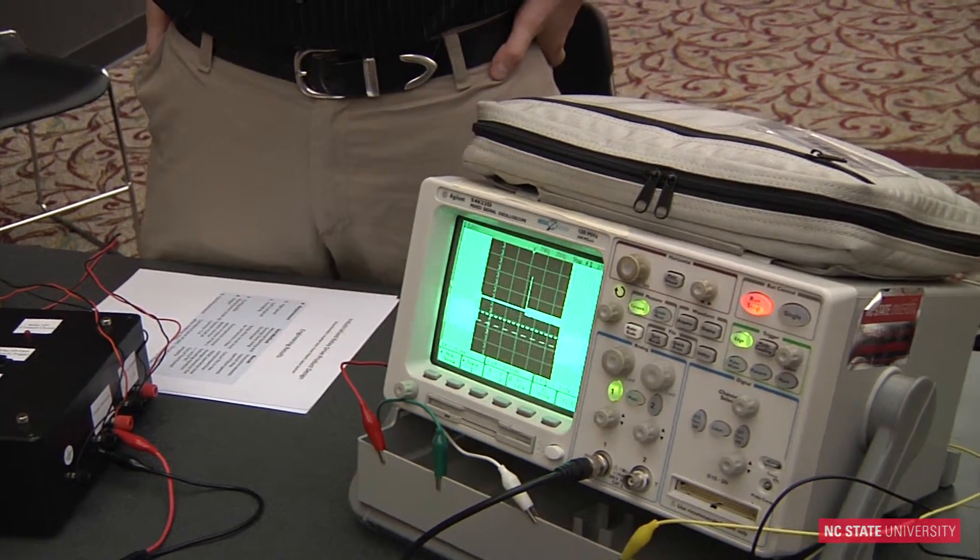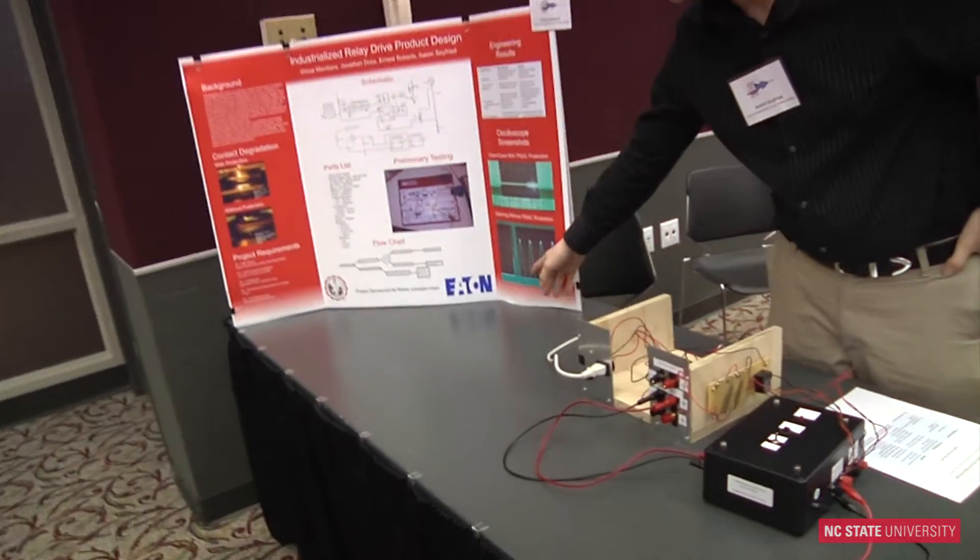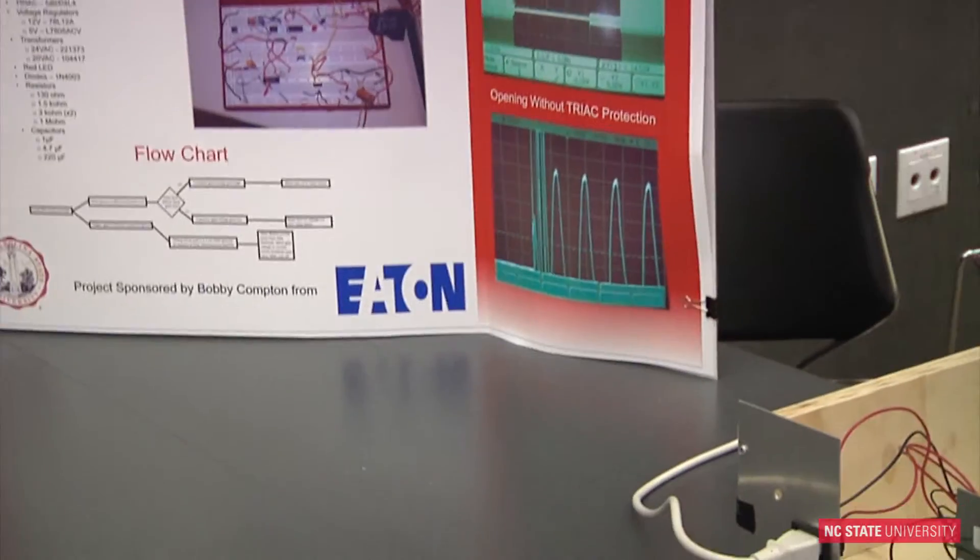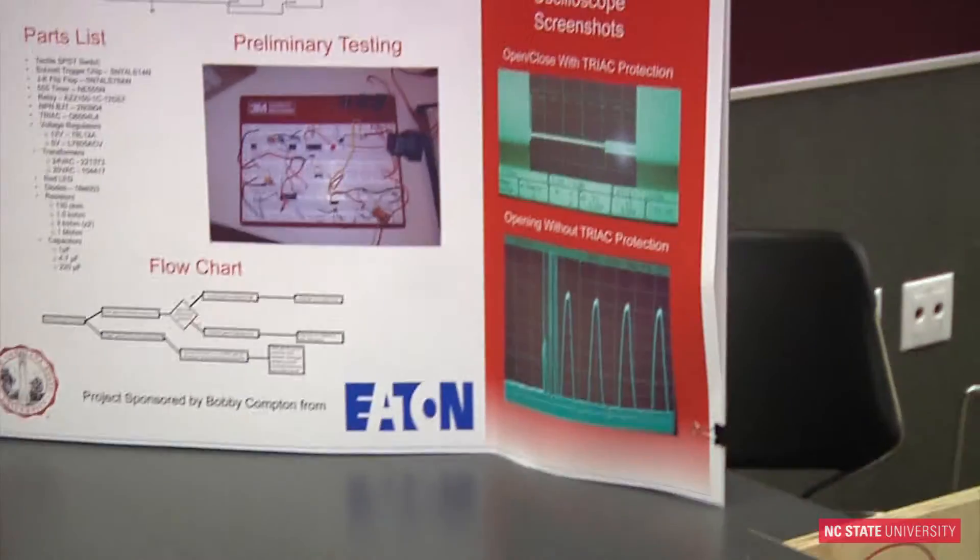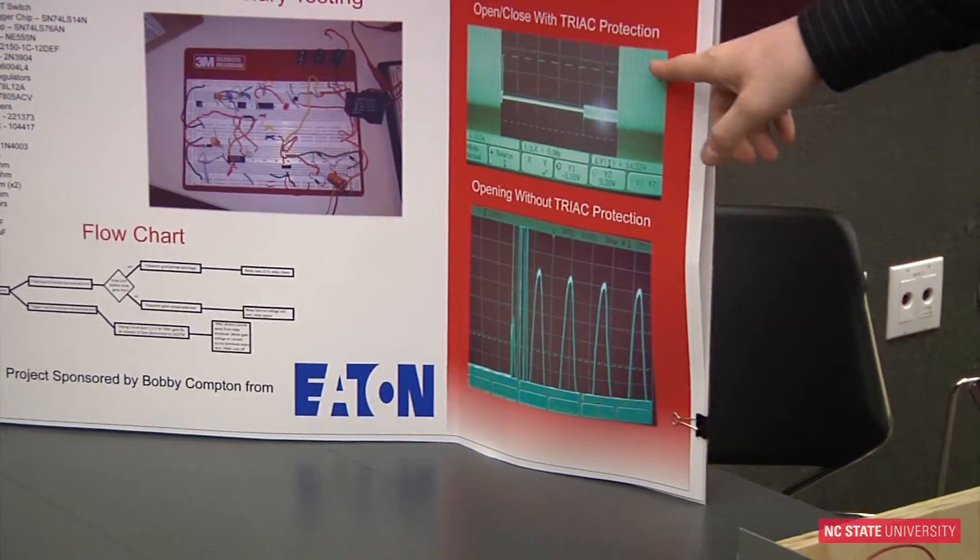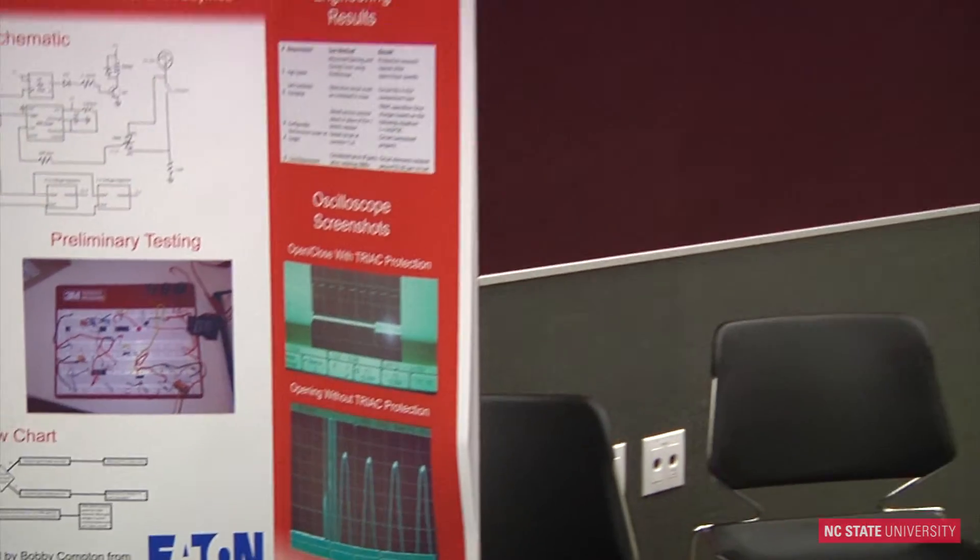This picture here shows what happens when there's no protection. Without protection, the voltage jumps way above the typical 24 volts that we have going through it. With protection, it only goes to about 5 volts.